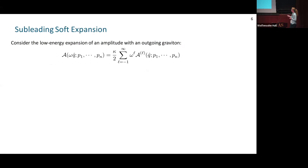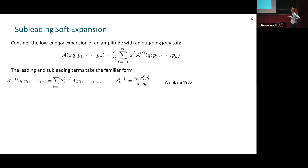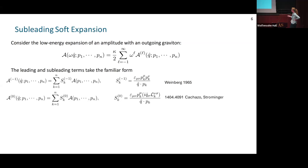Considering the low energy expansion of the graviton: the leading term takes the familiar form we already discussed. The subleading term also has a soft factor that factors out of the amplitude, now involving the angular momentum of the external particles. For scalars this takes a simple form; for spinning particles there would also be an intrinsic spin factor.